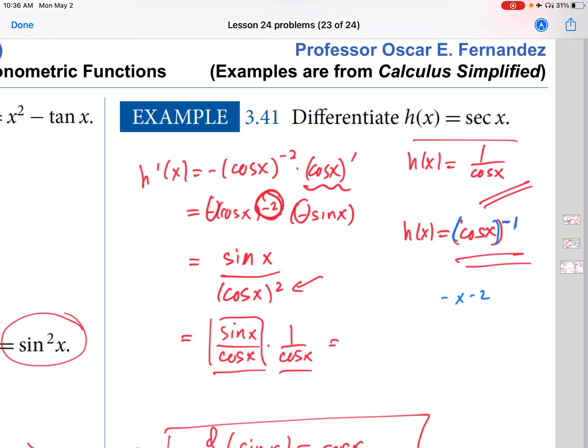And then we can split things off here. So this is sine x over cosine x times 1 over cosine x. There are two cosines downstairs. This part you should recognize as tangent x.